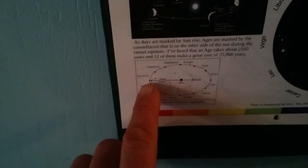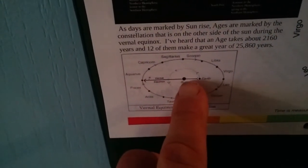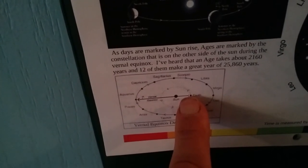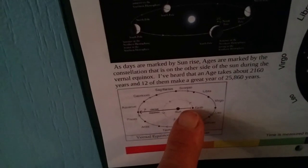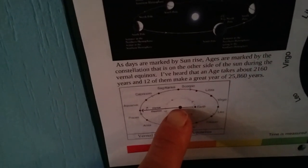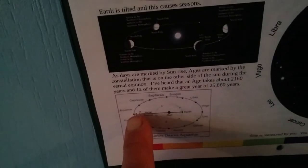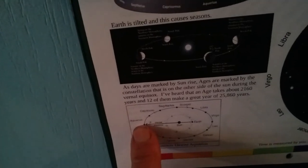And then it talks about the precession of the equinox, when the vernal equinox happens and we measure what constellation is directly behind the Sun. From the Earth, the Sun, and the constellation behind the Sun.